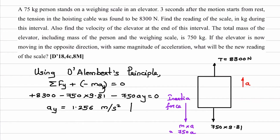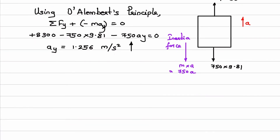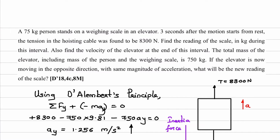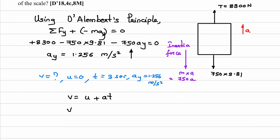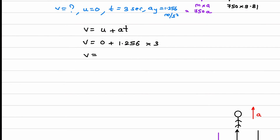Summation FY: plus 8300 minus 750 into 9.81 minus inertia force 750 into AY equal to 0. From here I can calculate acceleration in y direction: AY = 1.256 m/s². Acceleration is in upward direction. Now what is the question asked? We have to find velocity of the elevator at the end of this interval, meaning 3 seconds. So V is asked. Initial velocity U is 0, time is 3 seconds, and AY = 1.256 m/s².